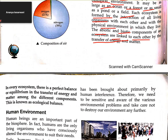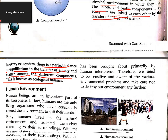Abiotic and biotic systems are linked by the transfer of energy and matter. In every ecosystem, there is a perfect balance in the transfer of energy and matter among the different components. This is known as ecological balance.